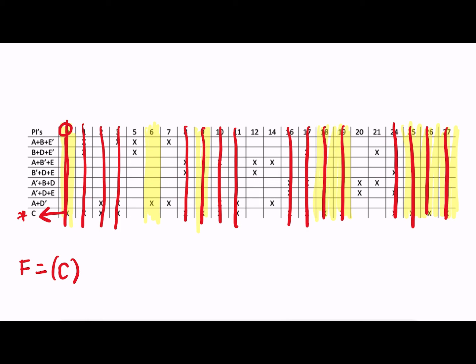At this point, we only have one more highlighted column left. So we're going to look at this one, 6, and find that A plus D prime is also an essential prime implicant. And that takes care of max terms 6, 7, 14.